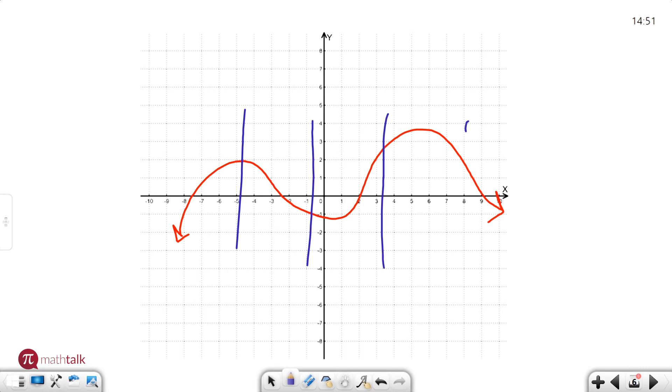So as you can see, I've drawn a couple of different vertical lines. It passes one time here, only one time, only one time, only one time. So anytime I draw a vertical line, it passes the graph once. That means that this graph is a function.